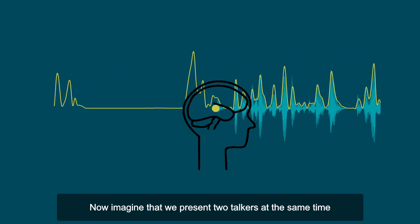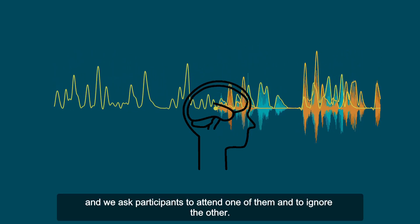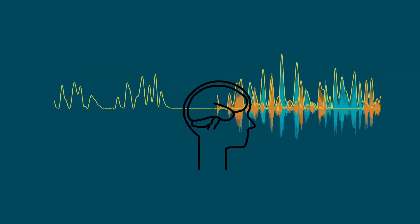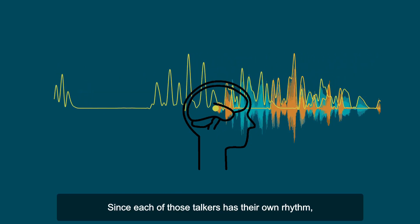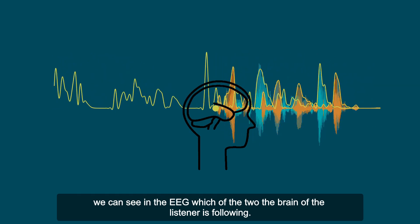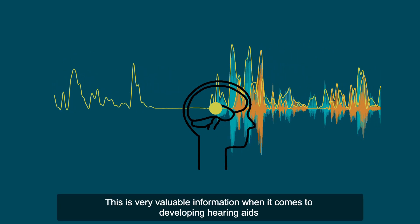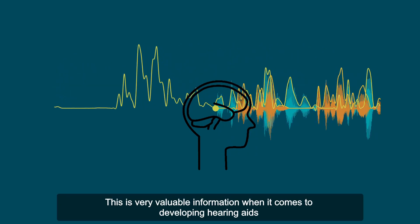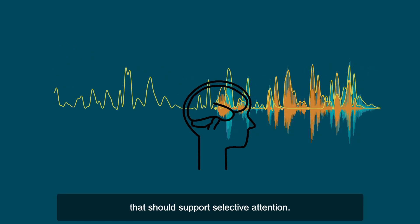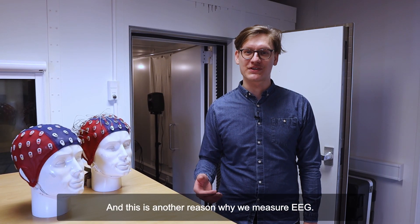Now imagine that we present two talkers at the same time and we ask participants to attend to one of them and to ignore the other. Since each of those talkers has their own rhythm, we can see in the EEG which of the two the brain of the listener is following. This is very valuable information when it comes to developing hearing aids that should support selective attention. And this is another reason why we measure EEG.